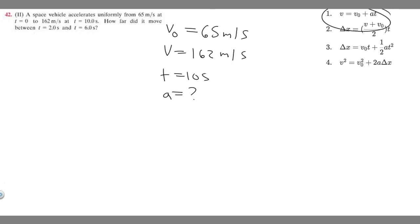We're going to use v equals v sub 0 plus a times t. So 162 equals 65 plus a times 10 seconds. Subtracting 65 from both sides, 97 equals 10a. Dividing by 10, a equals 9.7 meters per second squared. Now we've got a, so we can actually solve for delta x.